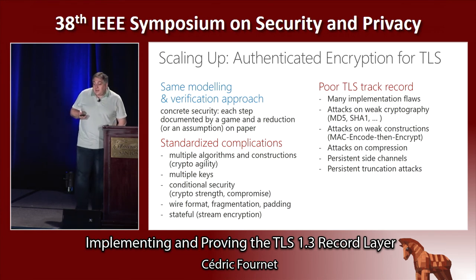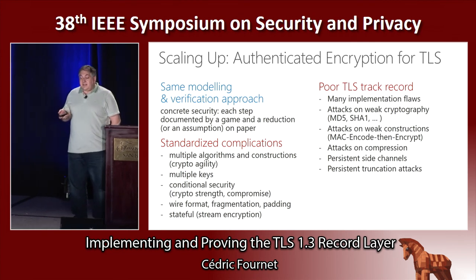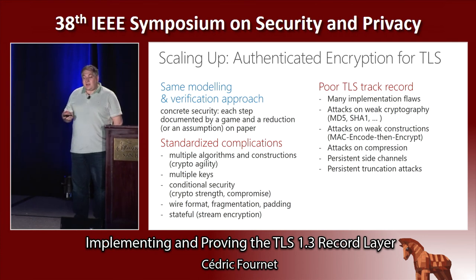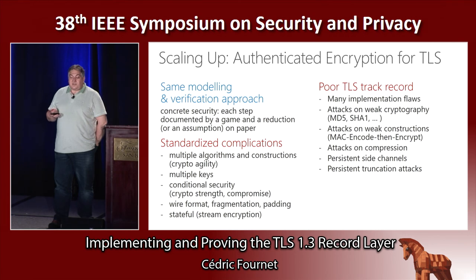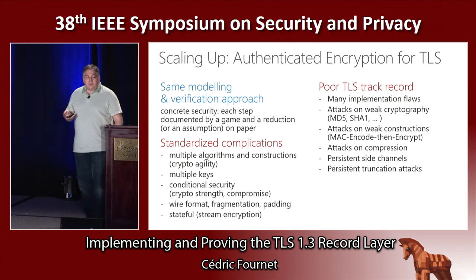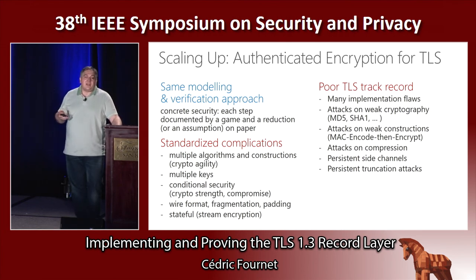Is it worth the trouble? If you look at the record layer for TLS, it's certainly complicated, and it's gotten wrong quite a few times. There is a long track record of implementation flaws in the record layer causing serious attacks. There are also attacks on the cryptography getting weaker — earlier versions of TLS mix older algorithms like MD5 or SHA-1. Some historic constructions of TLS are actually quite weak — the classic TLS 1.2 construction is MAC-then-encrypt, which is not that secure and causes many side-channel attacks persisting till today. Additionally, there's room for attacks based on compression and truncation, where only a prefix of what was intended to be communicated is received.